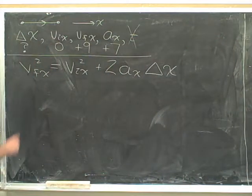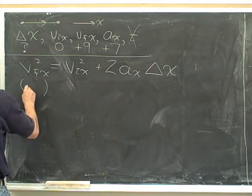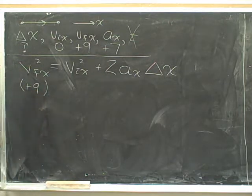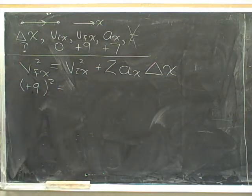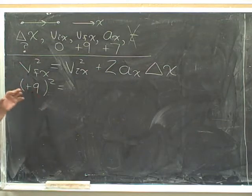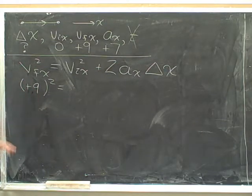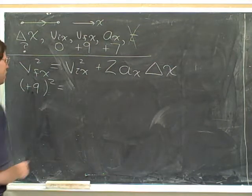What do we plug in for v final x? Well, first of all, this is a signed number, so we put in parentheses. Don't plug in 9. Plug in positive 9 and we're going to square that. Now, of course, in this case, it doesn't really matter whether this is positive or negative because we're going to square it, but let's build good habits. Always plug in the numbers with their signs. Put in parentheses to separate the signs.